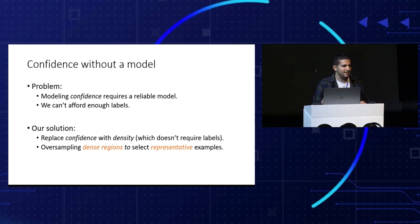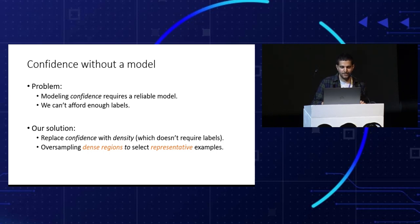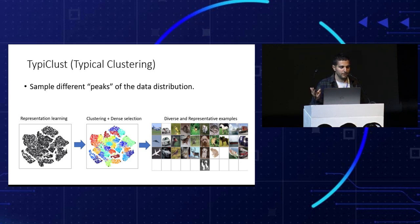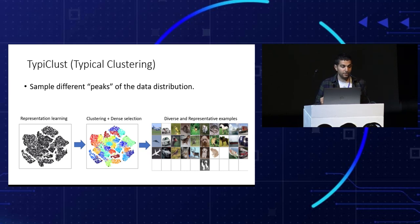The way we do it is to replace the notion of confidence, which requires a model and therefore labels, with the notion of density, which can be calculated in an unsupervised manner. We oversample dense regions to select representative examples. Our method is called Typical Clustering. It tries to select different peaks of the data distribution: we start with a representation learning algorithm to learn a semantically meaningful representation space, then — assuming we want to select 30 samples — we cluster the data into 30 clusters, and from every cluster we select the densest example, resulting in a diverse and representative set.